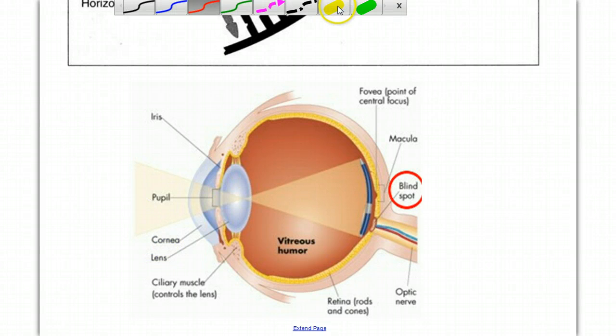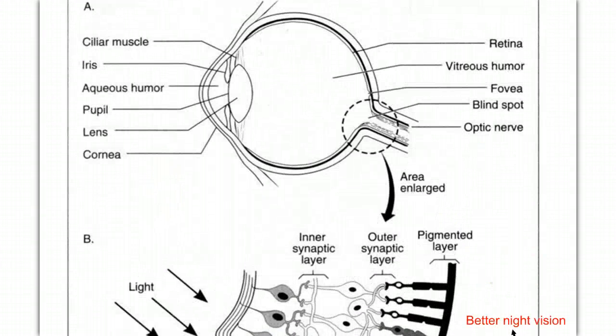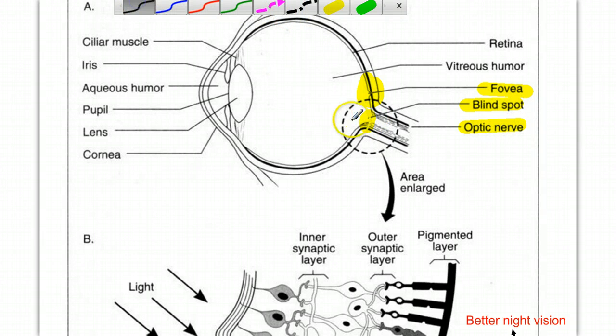A couple other things we want to point out here. The fovea centralis, or the fovea, is the center of our visual field. Looking up at this diagram, maybe a little cleaner, the fovea. It's here that we have our highest concentration of cones, and we have the sharpest image. But I also want to point out this area where the optic nerve leaves the back of the eye. It's also our blind spot. Because at this part right here, we have no receptor cells.